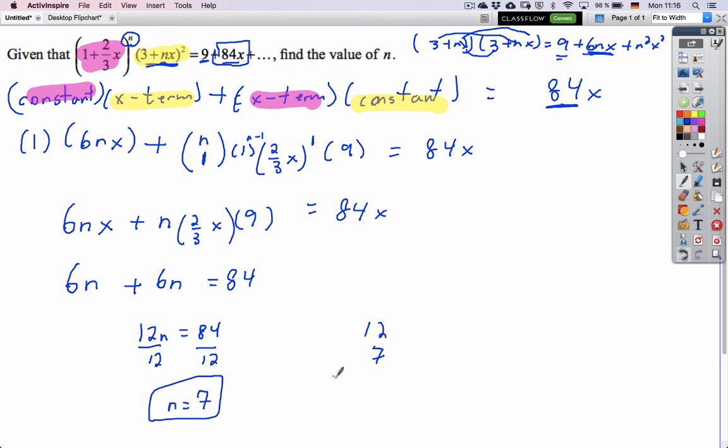Check it, 12, 7, good, 14, 84. So, the real kicker here was you needed the constant from this expansion times the x term from the yellow binomial expansion, then you needed to add the x term from this binomial, it was tricky because the n was the unknown.